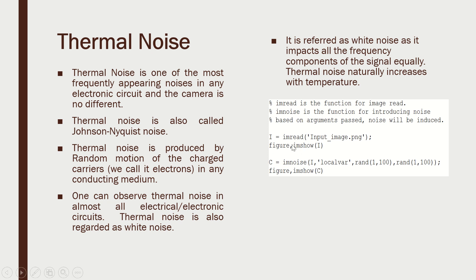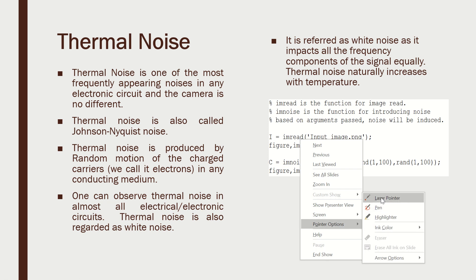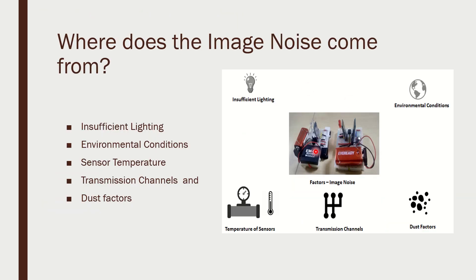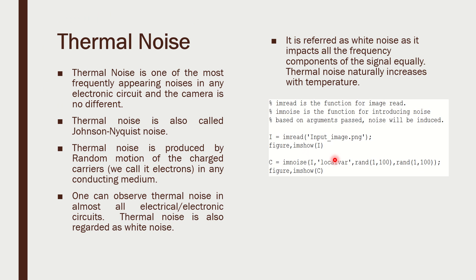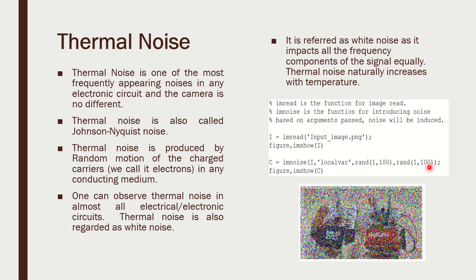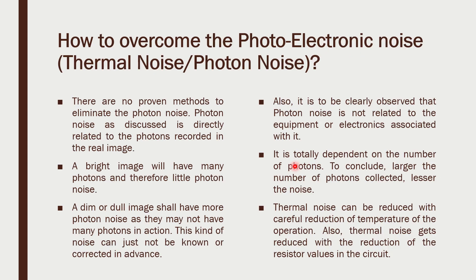We have coded an example to show an image affected purposefully with thermal noise, which you can see here. I am reading the input image using the imread function in MATLAB, and then I use imnoise with specific arguments to inject noise. Based on the arguments passed, the image gets fully affected by the noise. This type of noise is called photo-electronic noise or thermal noise. By varying the arguments to imnoise, I can control the results as needed.